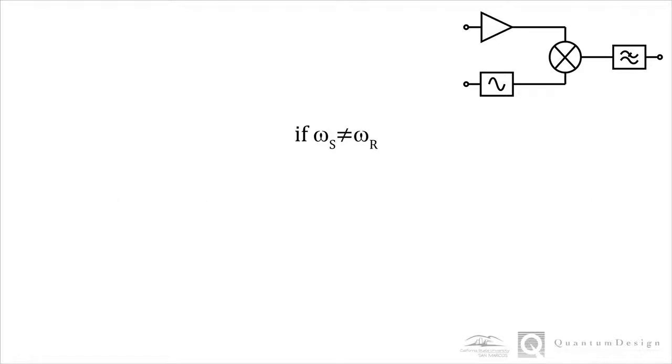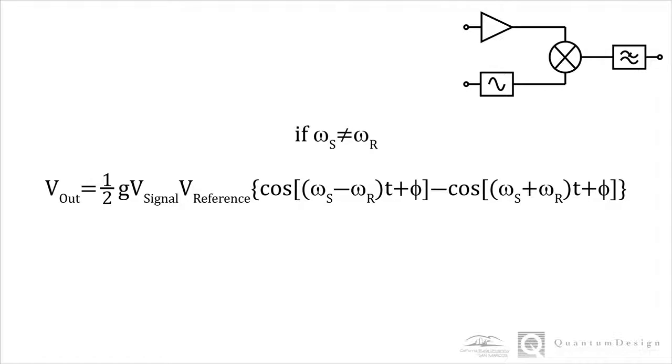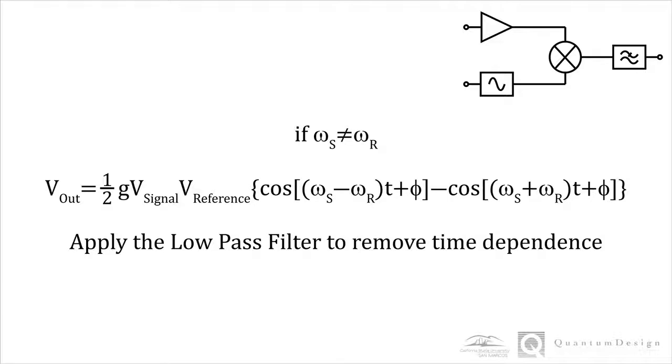The advantage of this technique is made clear when the signal frequency is not the same as the reference frequency. We take the mixture output as before, and now both cosine terms vary in time. The first term has a frequency corresponding to the difference in frequencies between the signal and the reference, and the second term has a frequency corresponding to the sum frequencies of the signal and the reference. By applying the low-pass filter, ideally, there is no output.